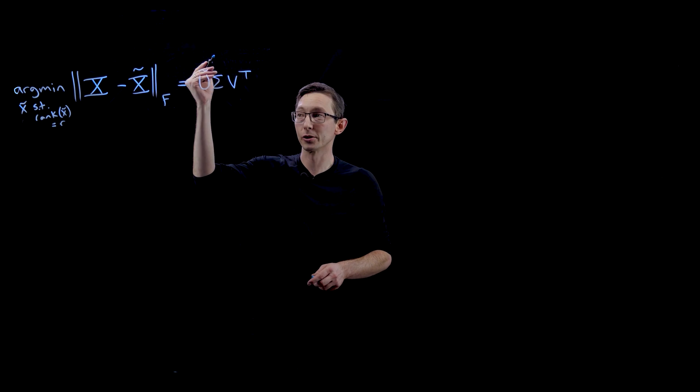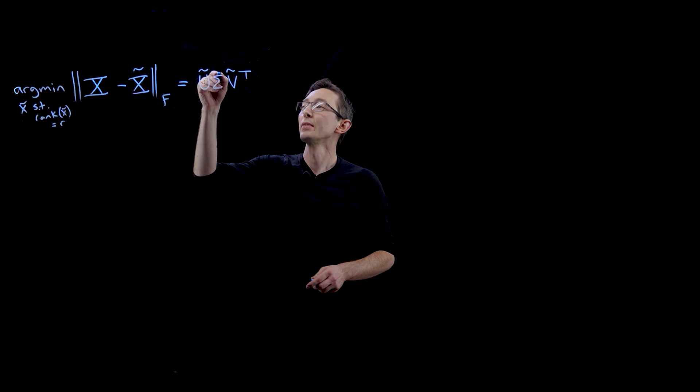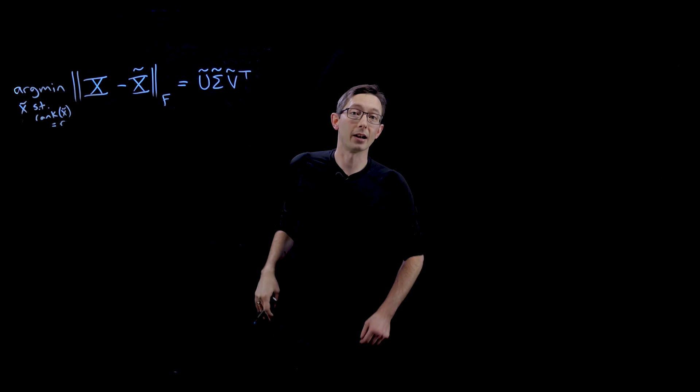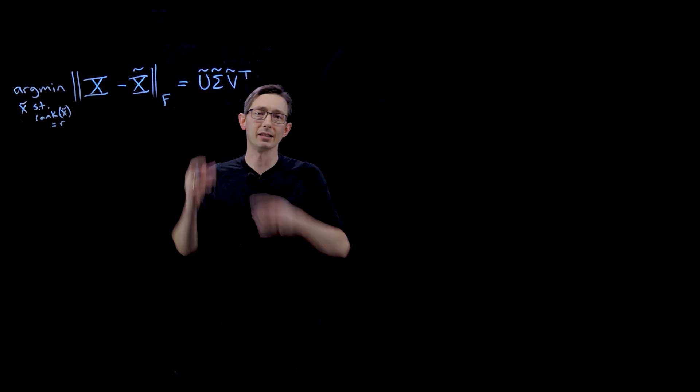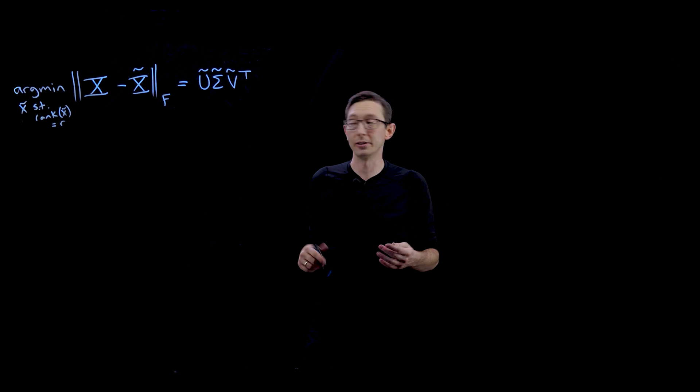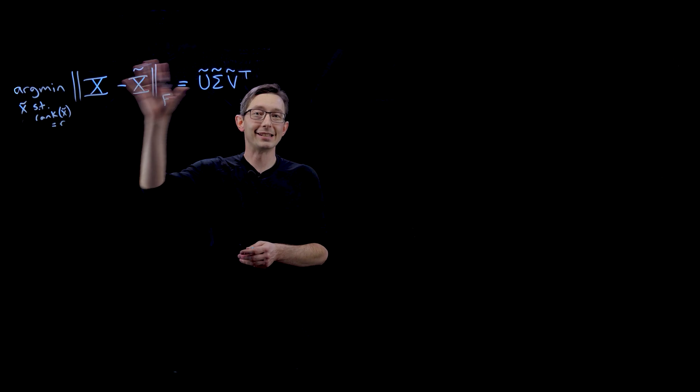We essentially keep just the first R columns of U and V and the first R by R sub-block of sigma. This is the truncated singular value decomposition. This is the Eckert-Young theorem.